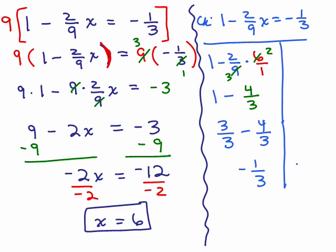On the right-hand side, that's what we have, negative 1 3rd, so it does check. So it looks like x equals 6 is the correct answer.